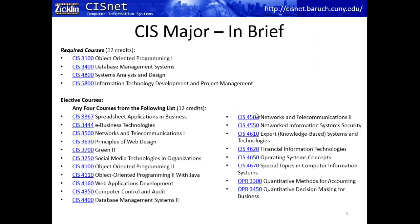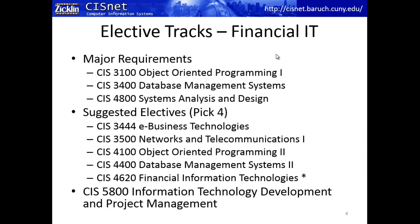We spent the first two videos in this series talking about the CIS Major. We spent quite a bit of time talking about the four required courses: CIS 3100, 3400, 4800, and 5800, which is the capstone course. The idea behind this new set of videos is to talk about what you can put together in terms of elective courses. We have 19 or possibly 20 elective courses, and students ask all the time: how do I choose a set of these courses that makes sense and aligns with my interest? For this one, we're going to talk about Financial IT.